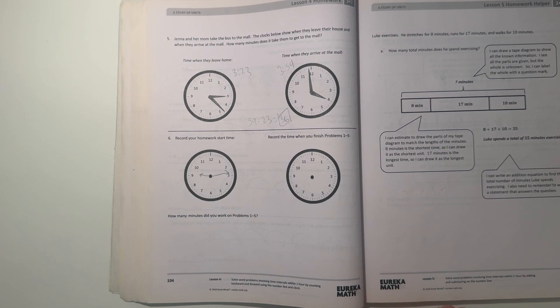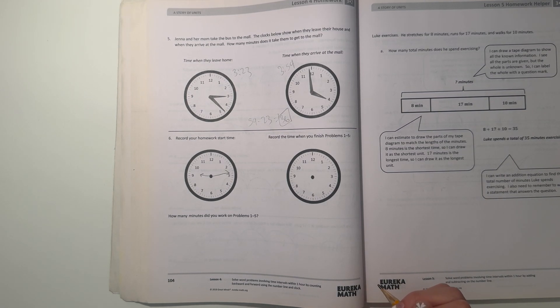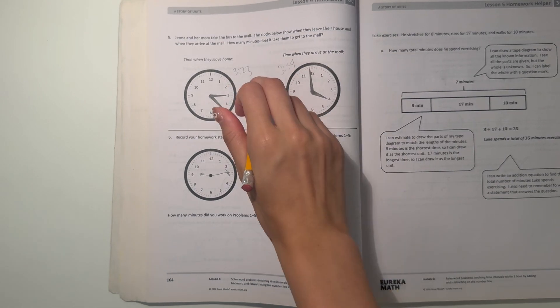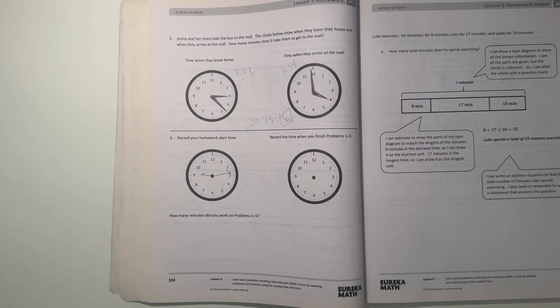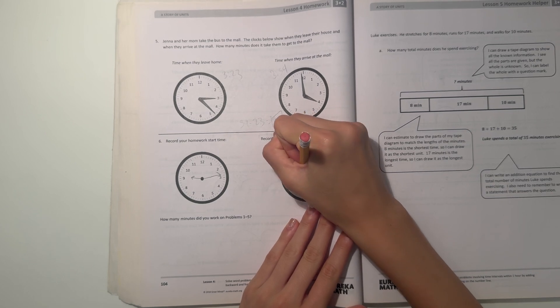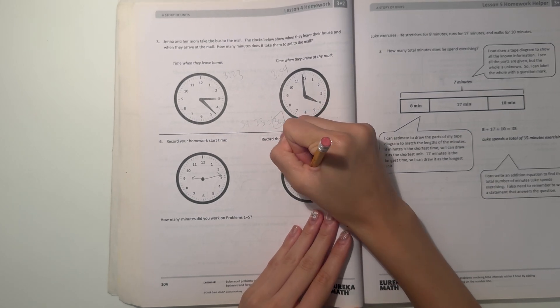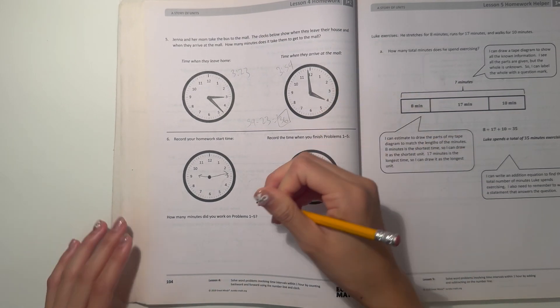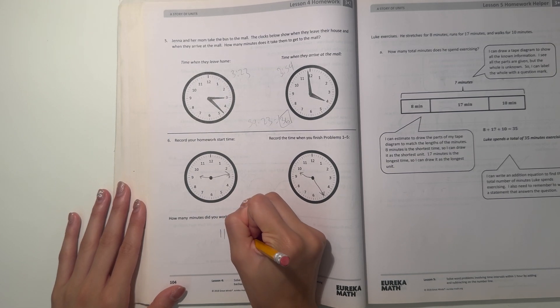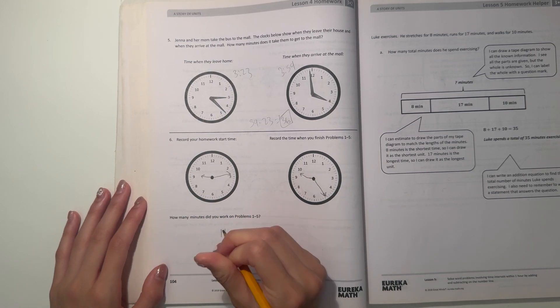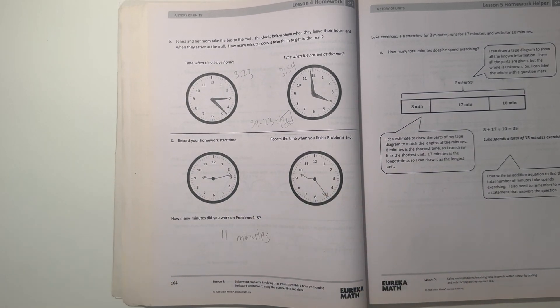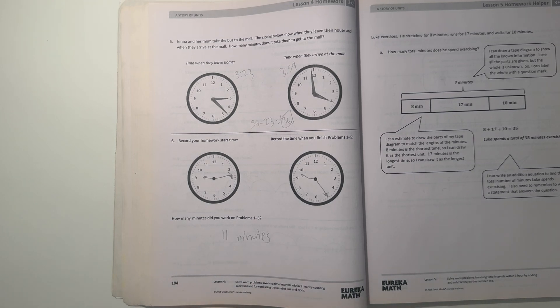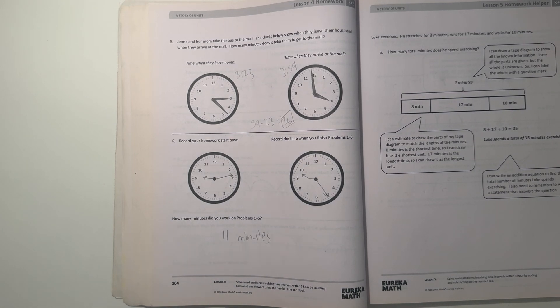Now record our homework time. We started at like 9:14, so right now it's 9:25. 25 minus 14, that's 11 minutes, so it took us 11 minutes to do the whole lesson. Thank you guys so much for watching, I hope this video helps, and please don't forget to like and subscribe because it really helps on my channel. See you next time, bye.